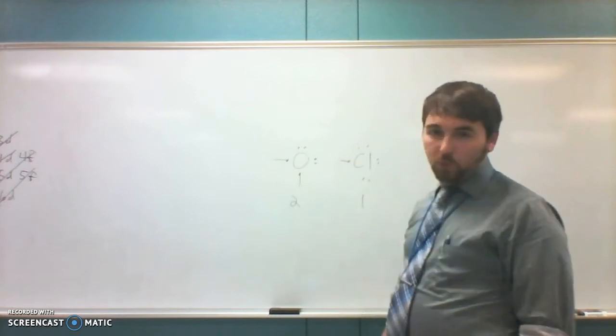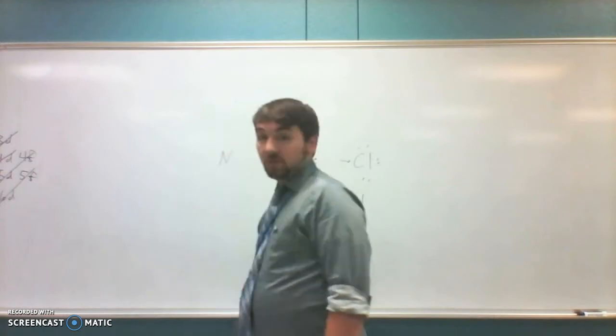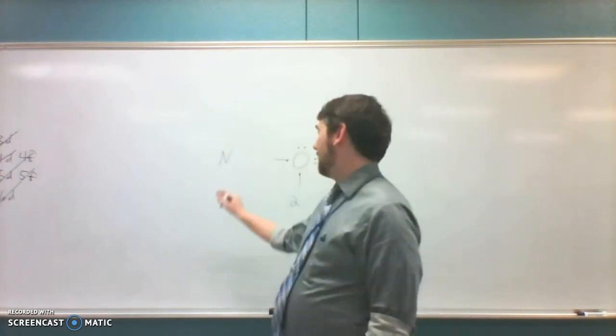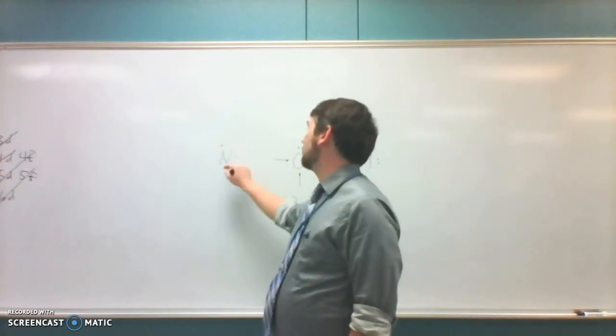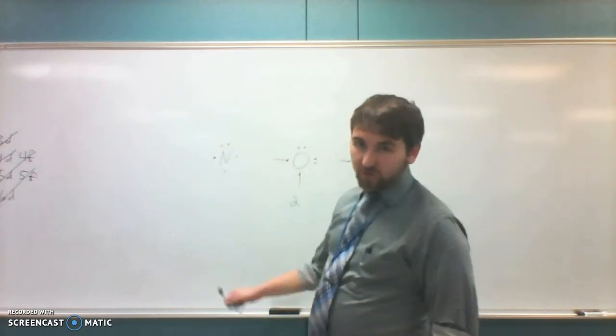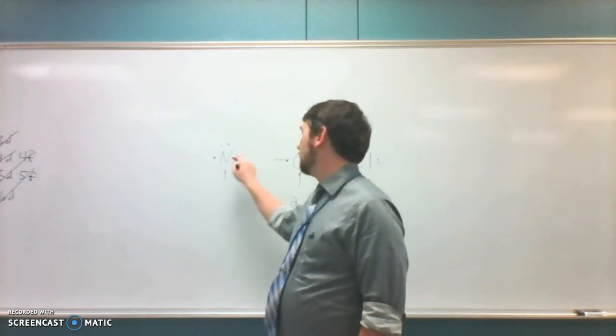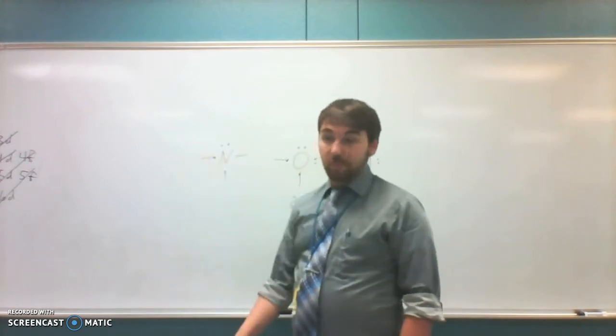If we're looking at nitrogen, move over this way. Nitrogen, column five, five outer shell electrons. One, two, three, four, five. Nitrogen has one pair of electrons. Three unpaired electrons. Three bonds.